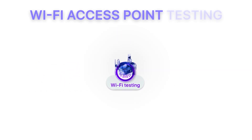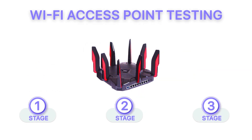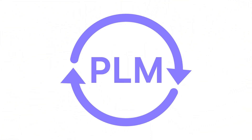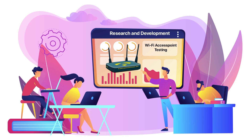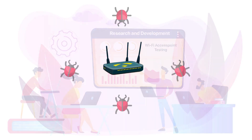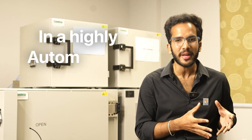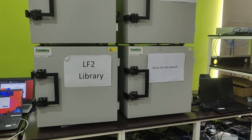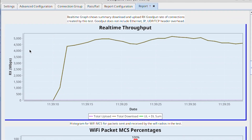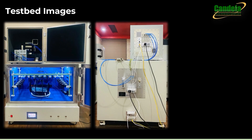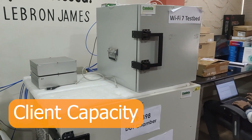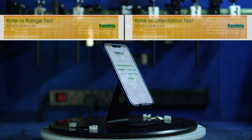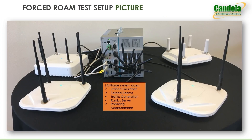Wi-Fi access point testing is best done in three stages depending on where you are in your product lifecycle. During the early stages of R&D, the product is expected to have a lot of bugs and it is important to run thousands of tests very quickly in a highly automatable and repeatable fashion. The best approach is using purpose-built testbeds with lots of virtual devices and traffic to benchmark performance under ideal conditions. Baseline throughput, client capacity, rate versus range, and roaming are some of the tests you can run in this stage.